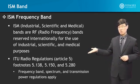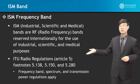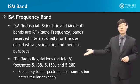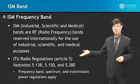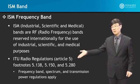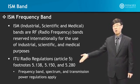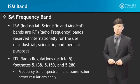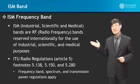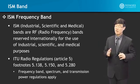In terms of international standards, the ITU — International Telecommunication Union — has radio regulations, Article 5, and correspondingly footnotes 5.138, 5.150, and 5.280. These are the standards that specify the frequency band, the spectrum, the transmission power regulations, and various other characteristics. Just because it's an unlicensed band and you are given approval to use it does not mean you can use it any way you want.